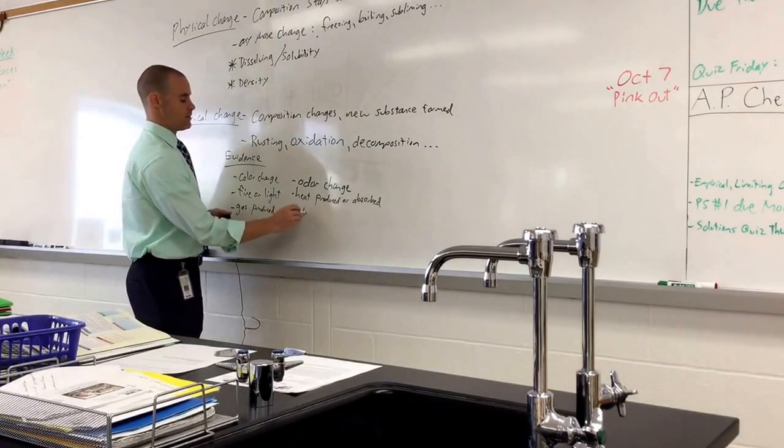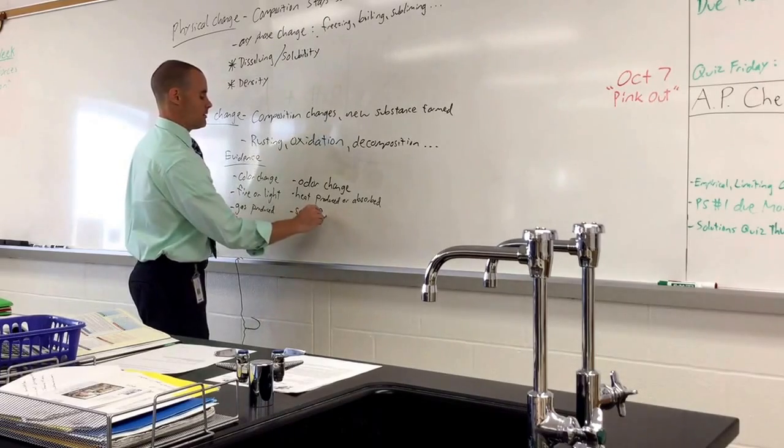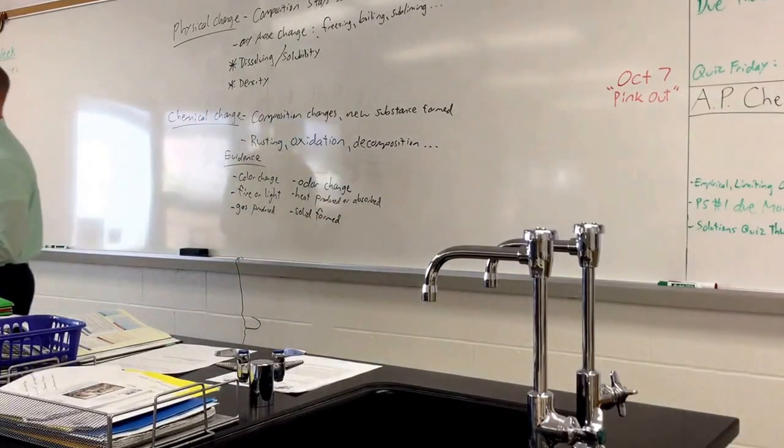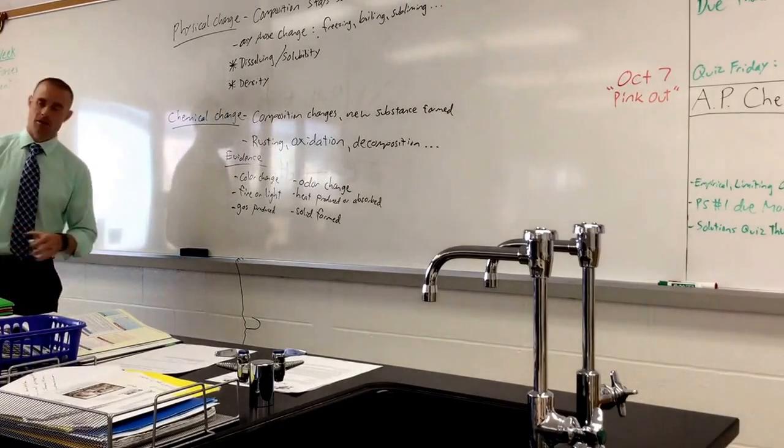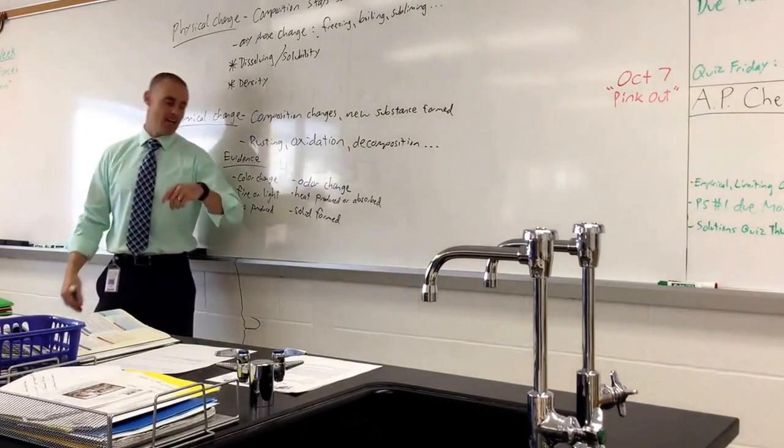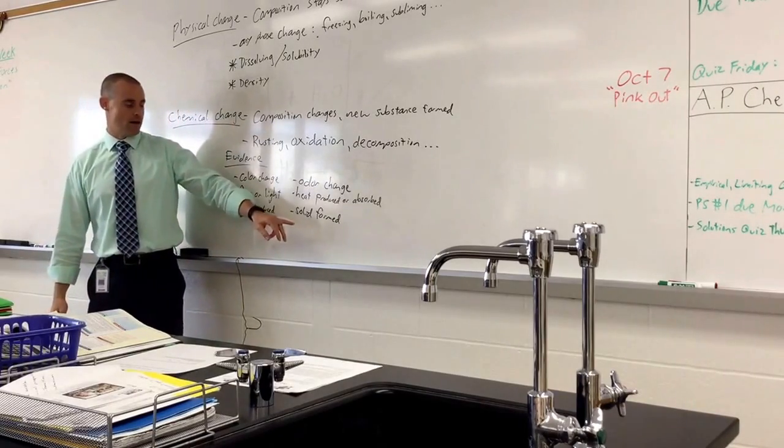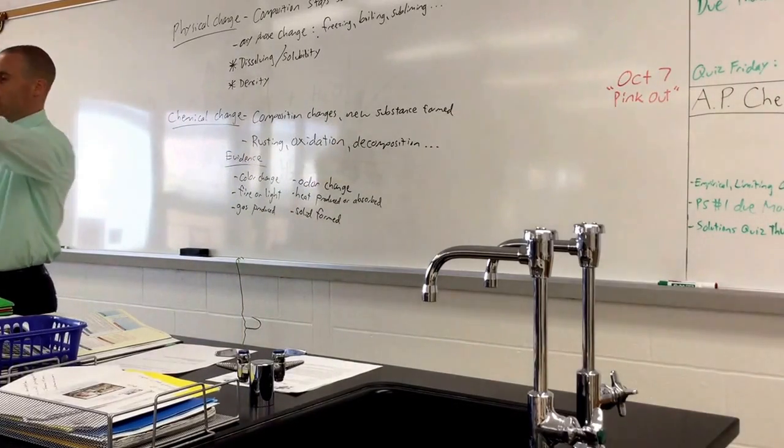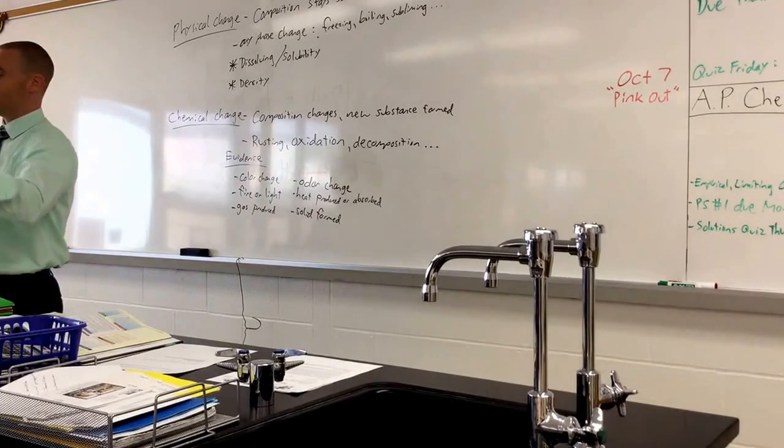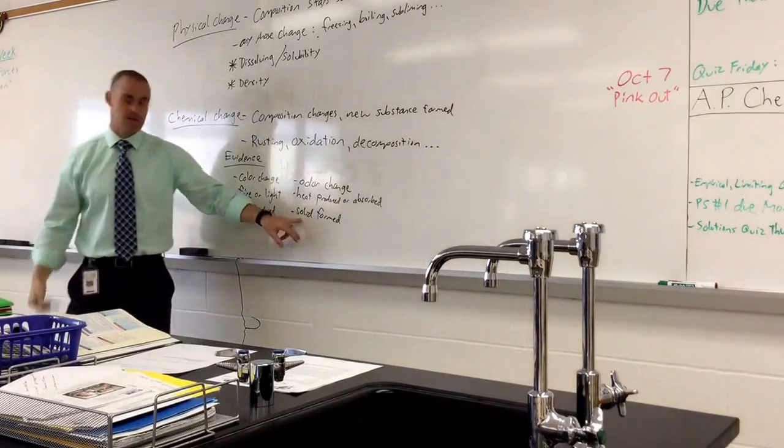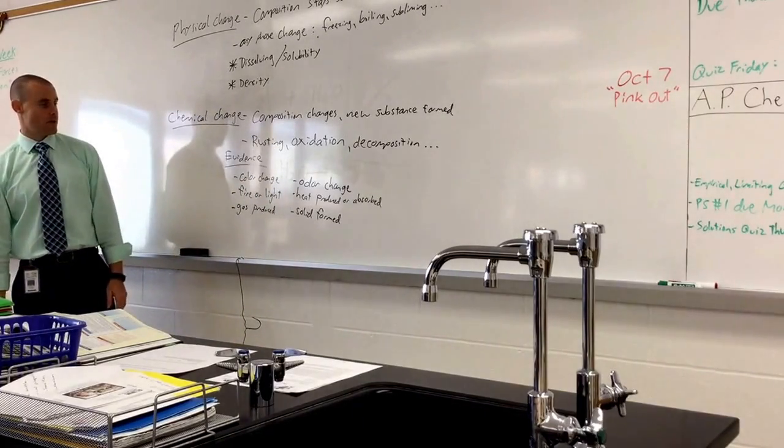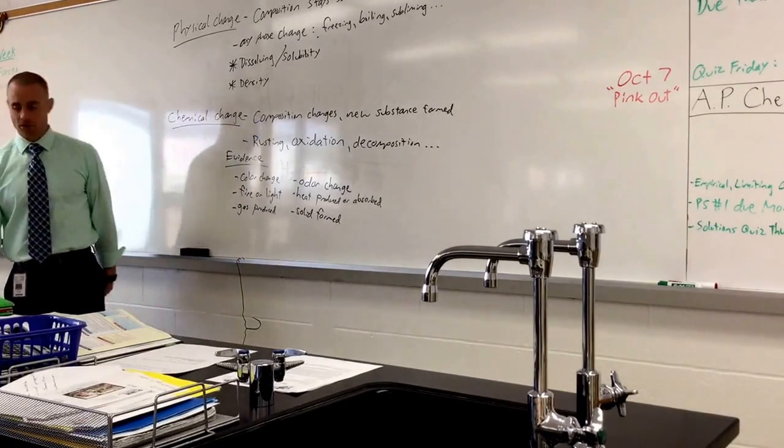A solid formed. Solid formed. And in chemistry, the word for solid is called precipitate. Kind of like precipitation is rain, snow, sleet, hail, whatever. Precipitate is a little different in chemistry. Oh, first day of school. I poured those two solutions. What color did it turn? Yellow. That yellow is called a precipitate. It was a solid. So that's a good example to kind of give you a visual there. So solid form. Evidence of a chemical change.